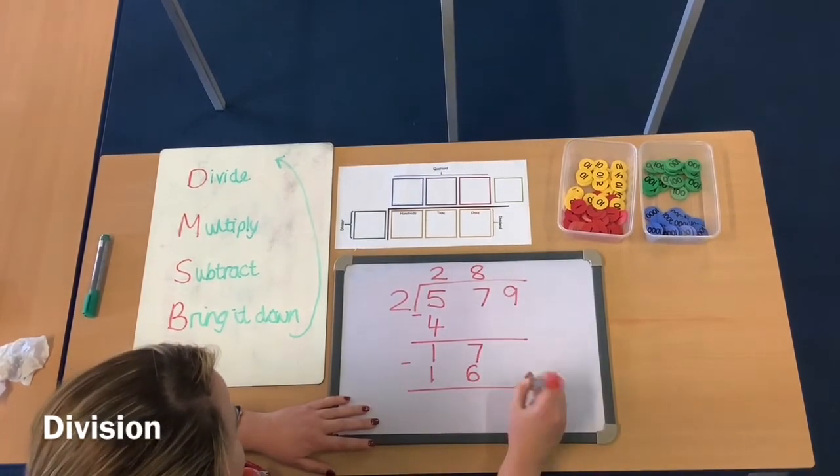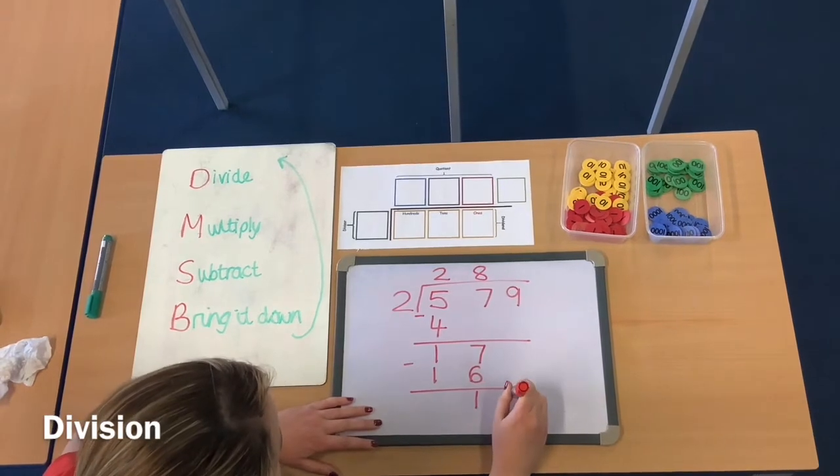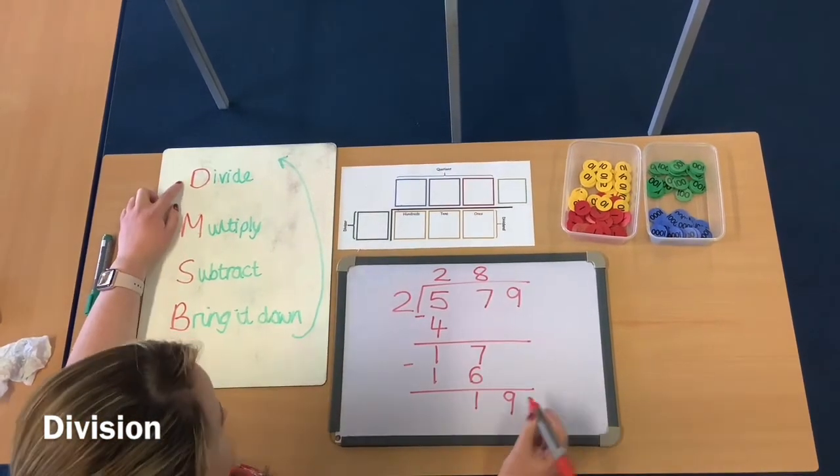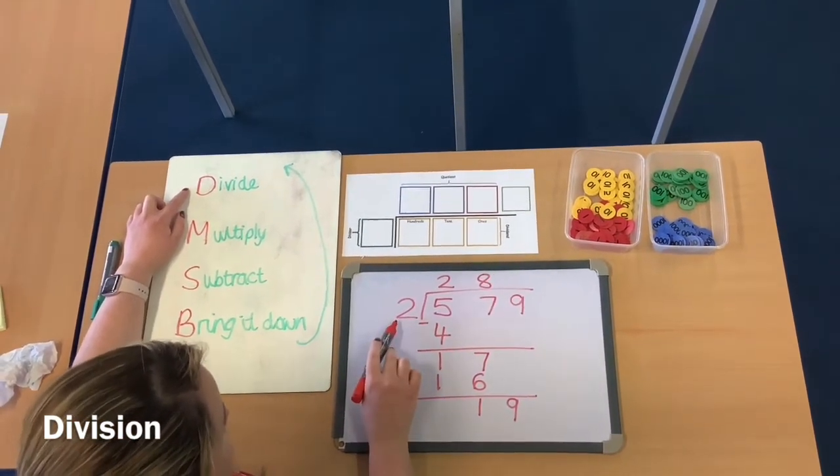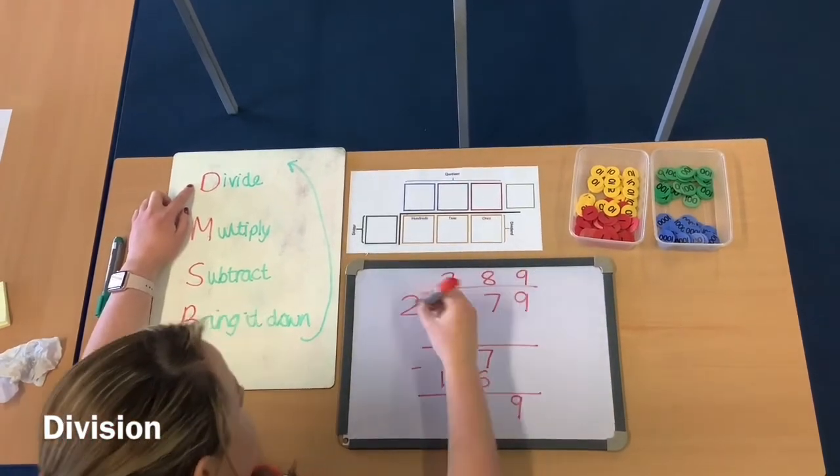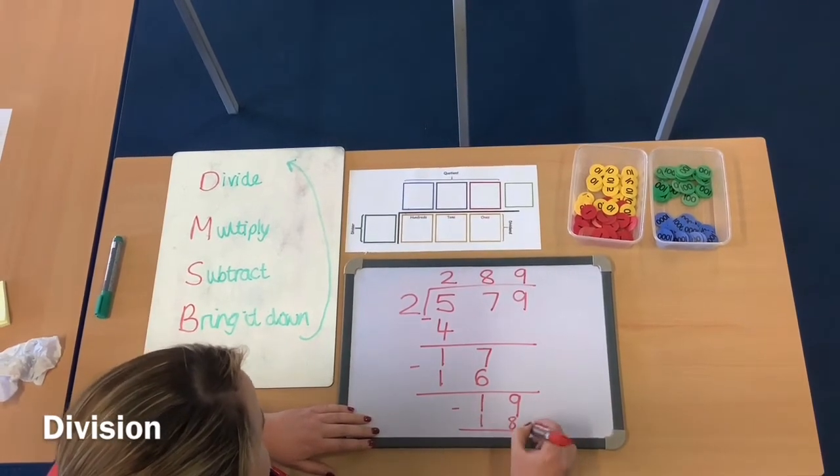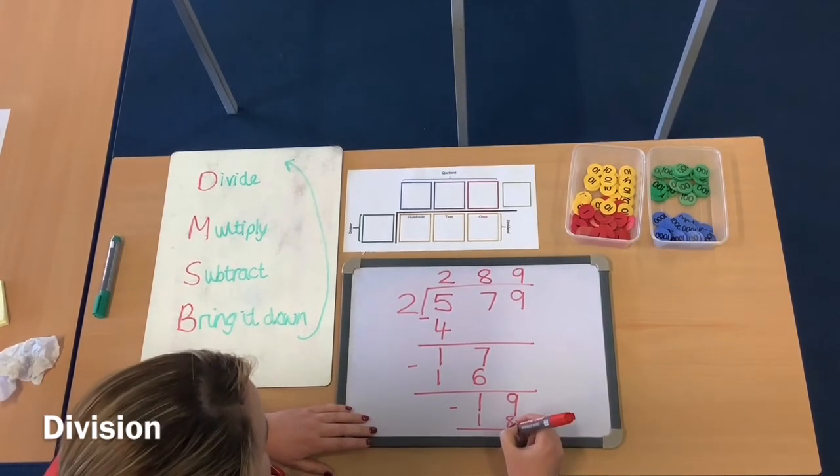Subtract. 17 take away 16 is 1. Bring down the 9. Back up to the top. So step 1, I'm going to do 19 divided by 2. How many 2s go into 19? It's 9. 9 times 2 is 18. Subtract that. So 19 take away 18 is 1.